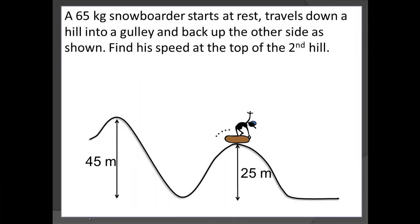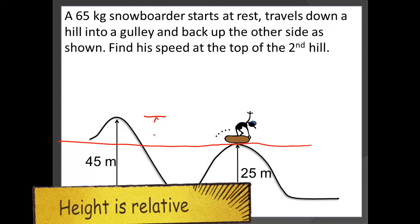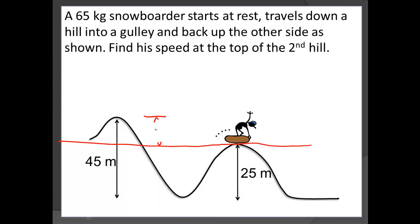A pretty classic example goes back to our roller coaster type idea. A 65 kilogram snowboarder starts at rest, travels down a hill into a gully, and back up the other side as shown. Find his speed at the top of the second hill. So you notice that we have a couple heights here. We could deal with this considering the very bottom of the hills as our horizontal. However, I want to make this a little easier. I want to go right here and I want to draw it so that we're essentially negating the 25 meters, making our height drop actually end up being 20 meters.